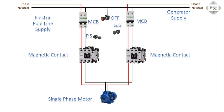Main neutral connection: main off switch to A1 coil to magnetic contactor connection.